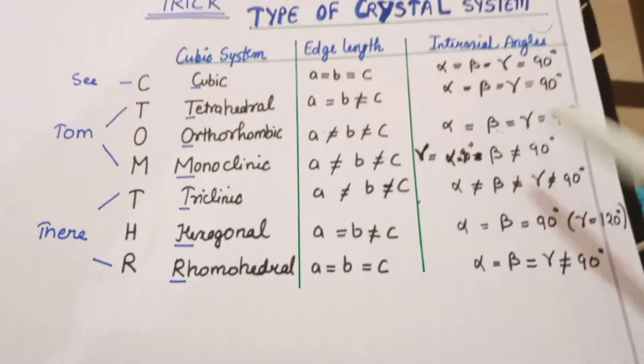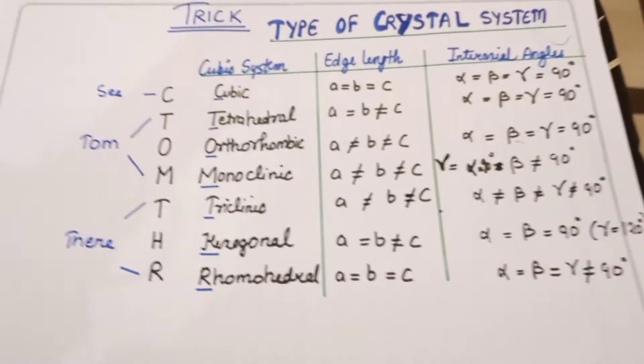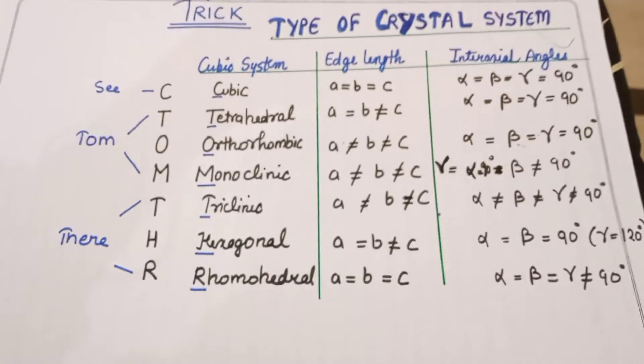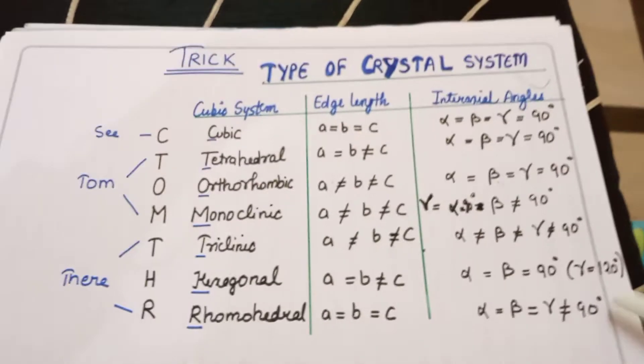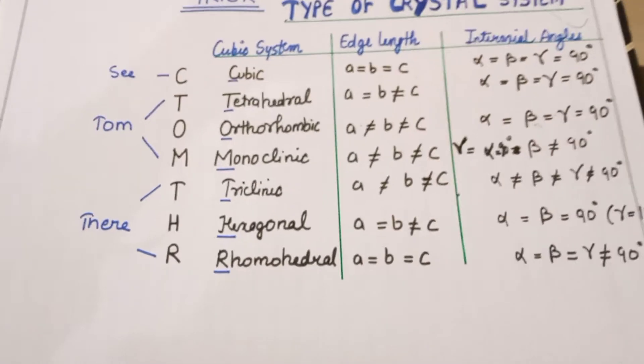In Monoclinic, what was it? Alpha equal to Gamma equal to 90 degrees, but Beta not equal to 90 degrees. So this comparison between Hexagonal and Monoclinic is very important, so you have to get it right.